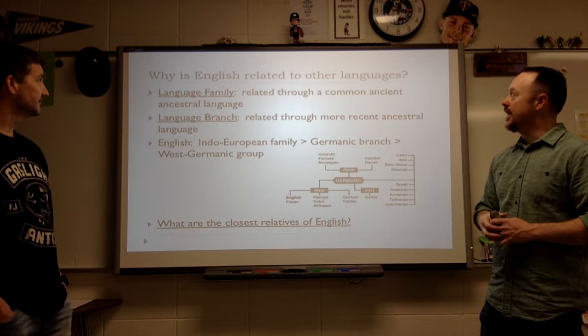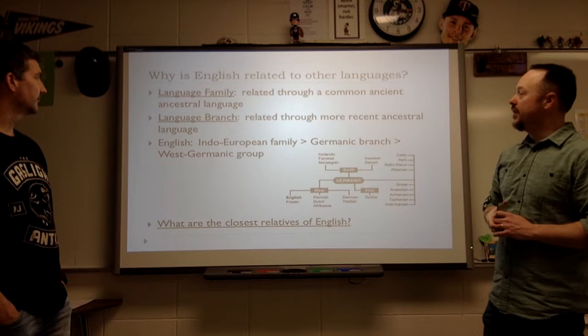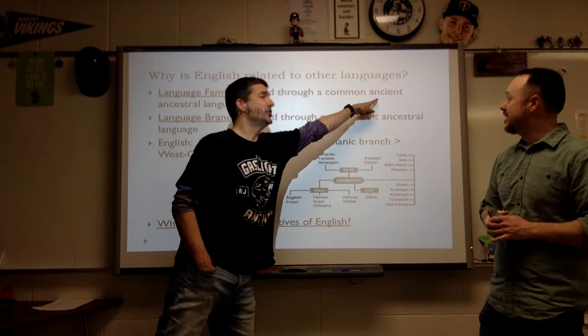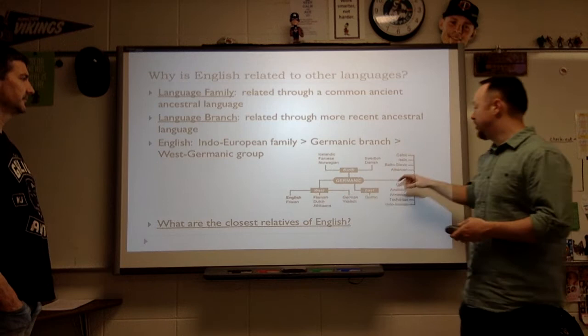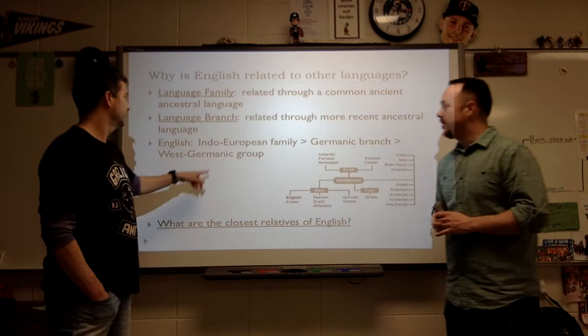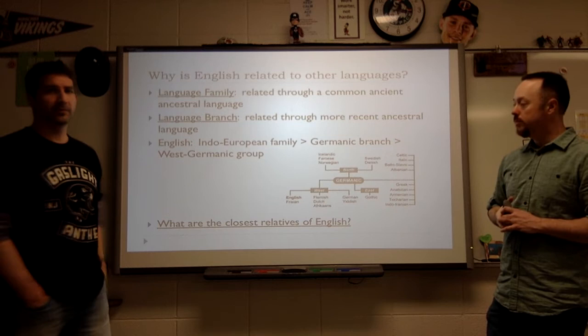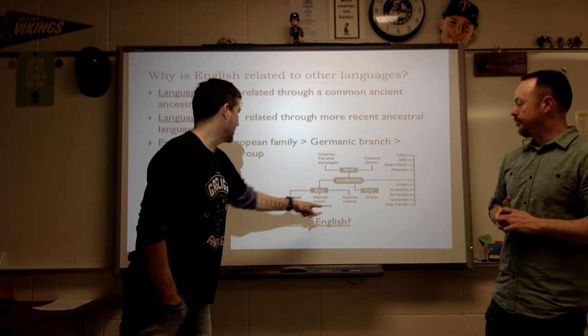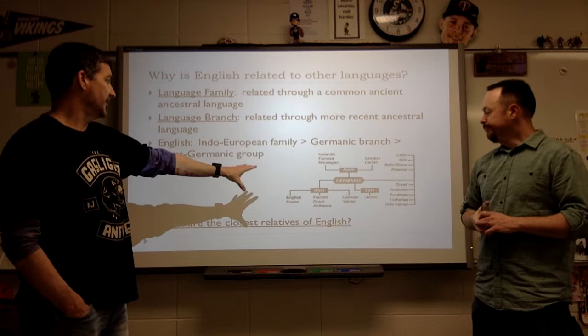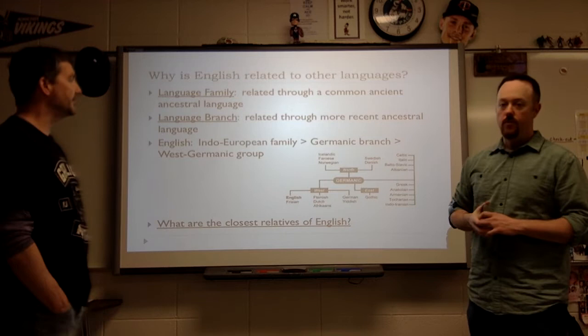Why is language related to other languages? We talk about language family and language branch. A language family is related through a common ancient ancestral language; a language branch is related through more recent ancestral languages. English is in the Germanic family, west branch, within the Indo-European family. Keep in mind that even within the Germanic branch, languages can be quite different — if you heard Phrygian, you wouldn't be able to identify it. A more recent ancestral language doesn't mean we have a whole lot in common.